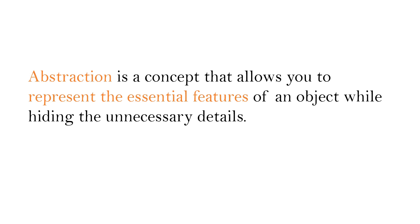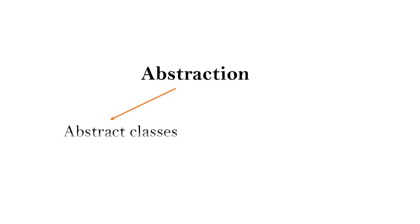Abstraction is a concept that allows you to represent the essential features of an object while hiding the unnecessary details. There are two primary ways to achieve abstraction: one is by using abstract classes, and the other option is using interfaces.